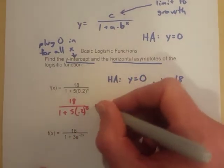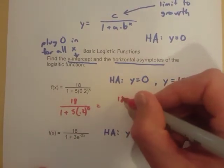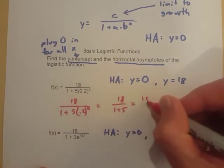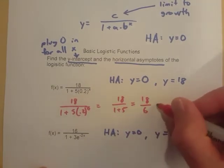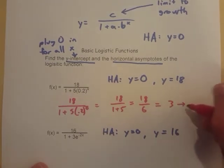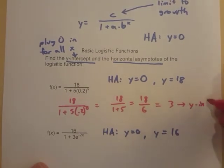Times 5, 5 times 1 is just 5. So what this equals is 18 over 1 plus 5, which is 18 over 6, which is going to be 3. So 3 is going to be the y-intercept in this case.